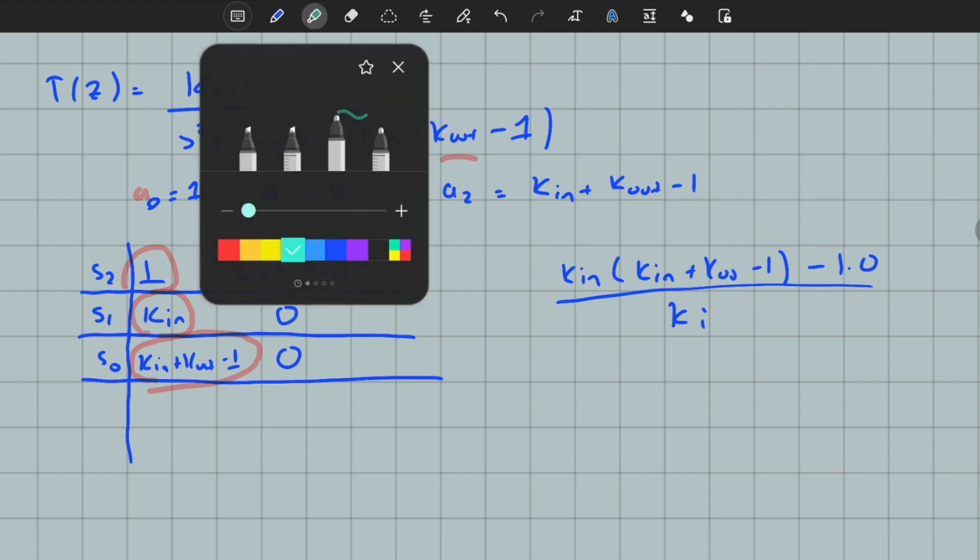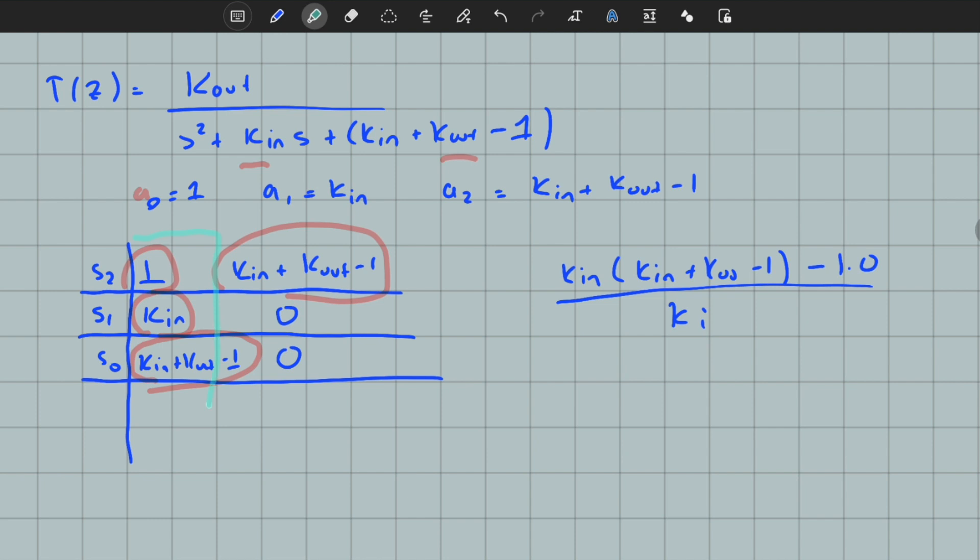first column should be greater than 0 for absolute stability. One is greater than zero - that's okay. The second condition is k_in should be greater than 0. This is our first condition. For obtaining a stable closed-loop system, k_in, which is the gain